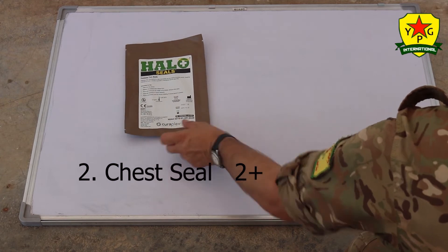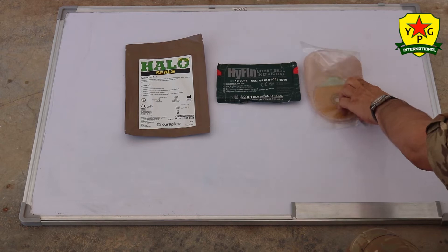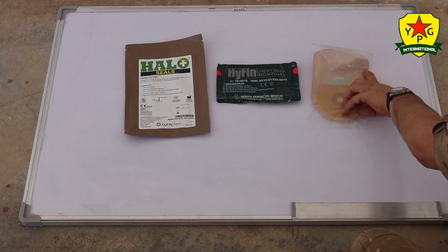Next, we have chest seals. Each pack should contain two seals. These are some different examples. A particularly good one is the hyphen vented, produced by North American Rescue.